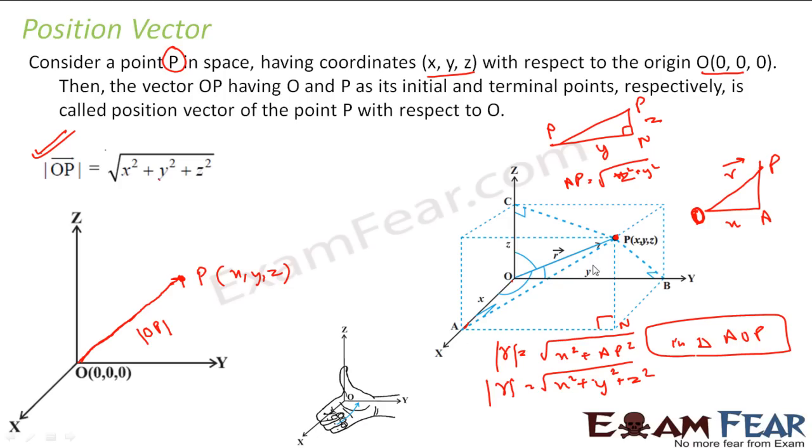We had this triangle AOP. In this triangle, this angle is 90 degrees. So we said that the magnitude of R is equal to root of x square plus AP square. The same thing, I wrote AP square as y square plus z square. Because AP is nothing but root of y square plus z square. Thus I got magnitude of a position vector or the distance of the position vector from origin is x square plus y square plus z square, where x, y, z are its coordinates.